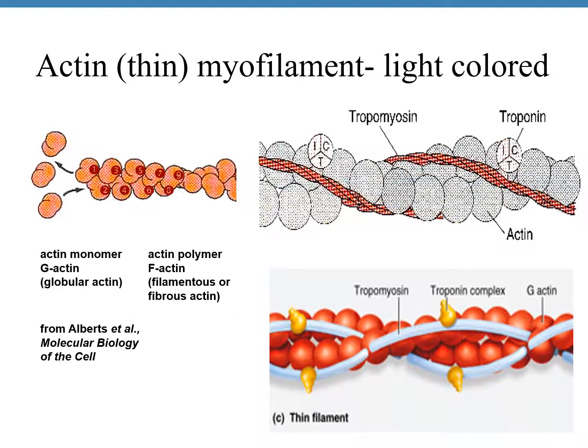The thin myofilament is made up of three proteins: actin, troponin, and tropomyosin. To understand their arrangement, imagine a pearl necklace — that string of pearls is the actin protein. If you wind a gold chain around the pearl necklace, that gold chain represents the tropomyosin protein. To prevent the tropomyosin from slipping, if you glue it at certain points, that blob of glue represents the troponin protein.